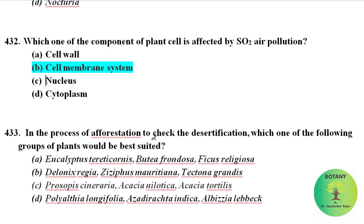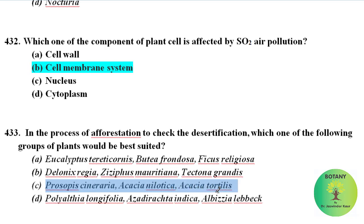In the process of afforestation to check deforestation, which group of plants would be best suited? Prosopis cineraria, Acacia nilotica, and Acacia tortilis are used in the process of afforestation.